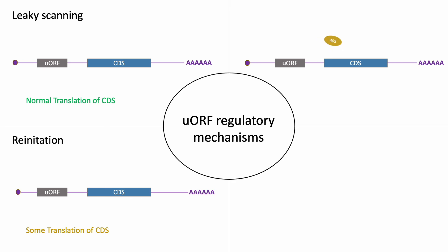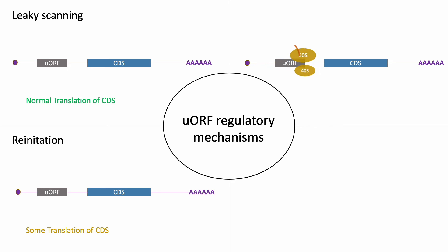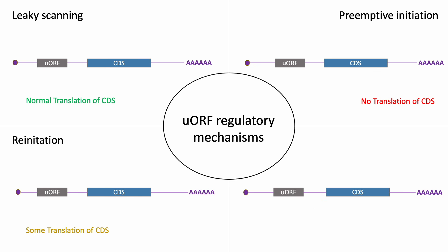However, if both the small and large ribosomal subunits dissociate from the mRNA after translating the UORF, they cannot reinitiate at the main start codon. This is referred to as preemptive initiation. In this case, the main coding region does not get translated at all.